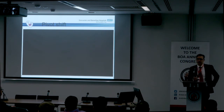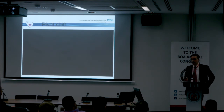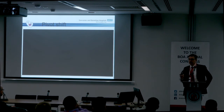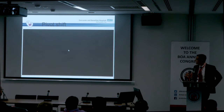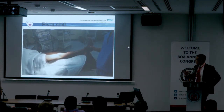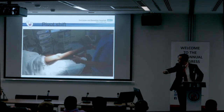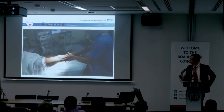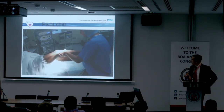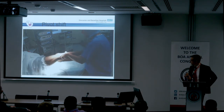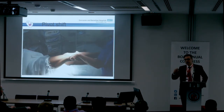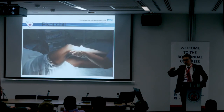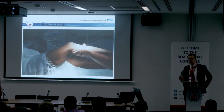Pivot shift test — be careful about doing this in the exam, but you should know about it. You should probably say you'd do it under anaesthetic. You extend the knee, applying axial load, internal rotation, and valgus stress — then you get subluxation and reduction. You need an intact medial collateral ligament. The iliotibial band moves from being a flexor to an extensor as you get that subluxation of the tibia.